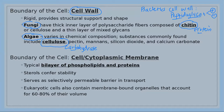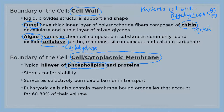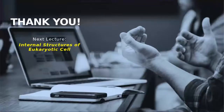Under the cell wall is the cell membrane. The cell membrane of eukaryotic cells and prokaryotic cells is the same — a phospholipid bilayer: two layers of phospholipid molecules with proteins and sterols such as cholesterol. That completes the external structure and cell boundary; we will continue with the internal structure in the next lecture.